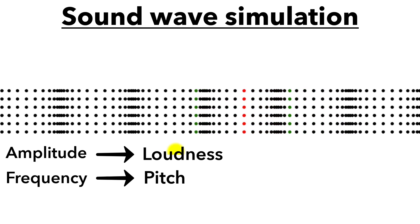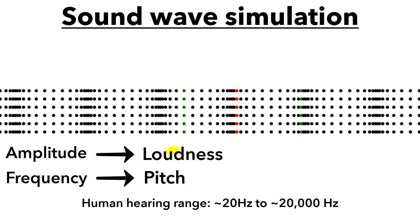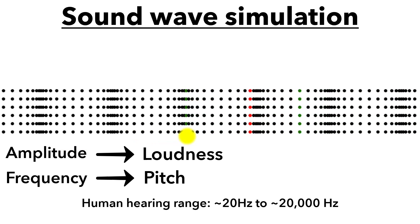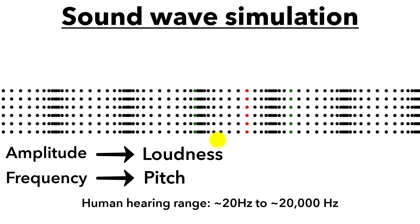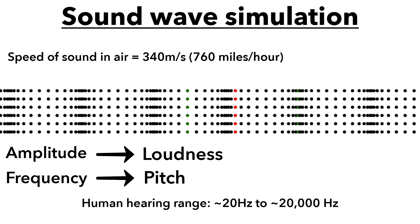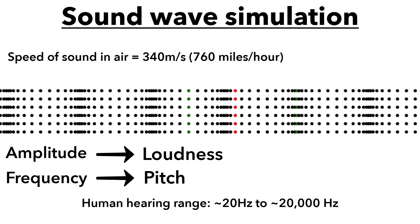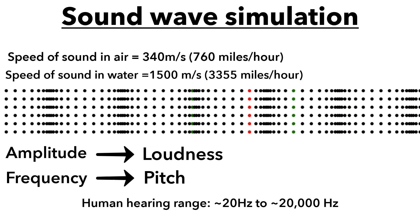Our ears can't hear all frequencies. Humans can detect sounds roughly between 20 Hz and 20,000 Hz. Anything beyond that range we can't hear — and we call that ultrasound. Another important property of sound is its speed — how fast the disturbance propagates. The speed of sound depends on the medium. In air, the speed of sound is about 340 meters per second, which is around 760 miles per hour. That's fast, but far slower than light — which is why you see lightning before you hear thunder. The farther you are, the bigger the gap. In water, sound travels about four times faster than in air.